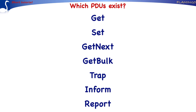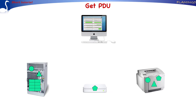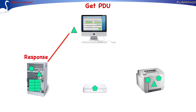Except for the REPORT PDU, in this tutorial we will discuss these PDUs in detail. First, we will discuss the GET REQUEST PDU, which is sent by the manager to the agent to request the value of one or more managed objects. Within the request, the manager specifies the identifiers of the objects it is interested in. In this example, the manager wants to know the value of the triangle object. After reception of the GET REQUEST, the agent determines the value of the triangle object and sends this value, together with the object identifier, back to the manager. The combination of object identifier and object value is called a variable binding, or in short, VARBIND.